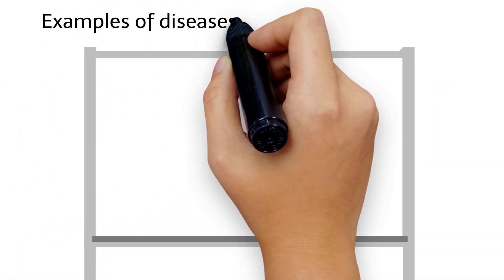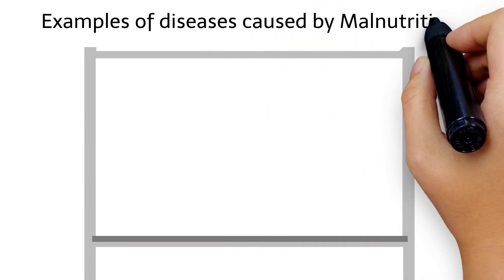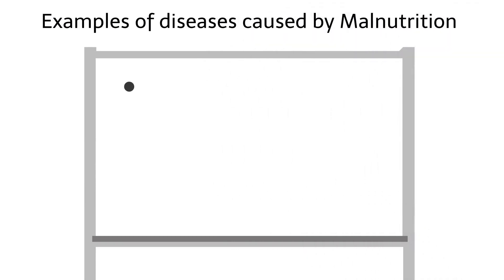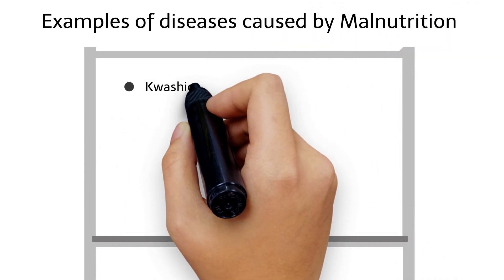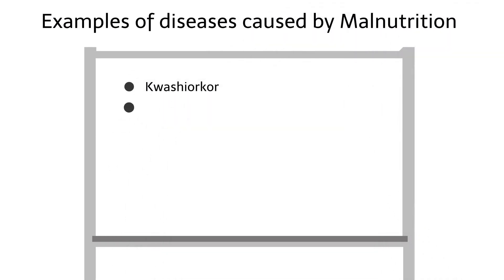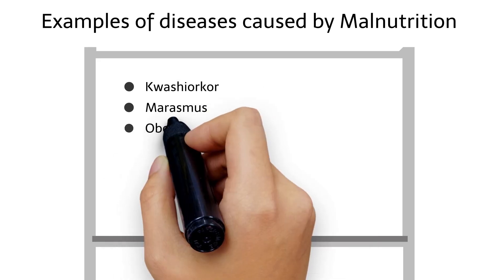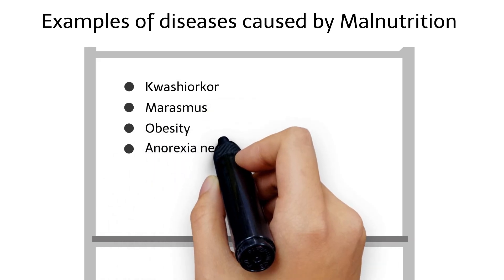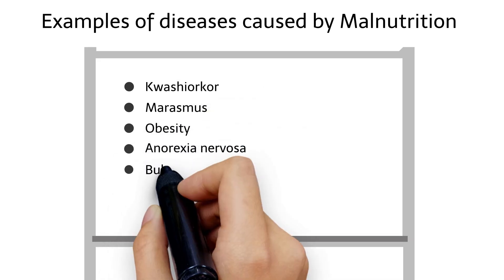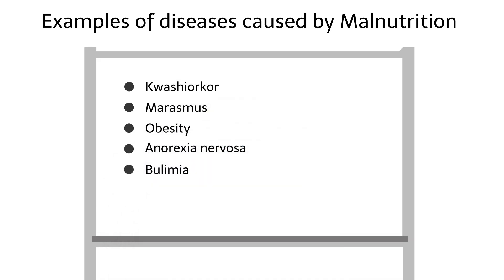Examples of diseases caused by malnutrition: Kwashiorkor, Marasmus, Obesity, Anorexia nervosa, and Bulimia.